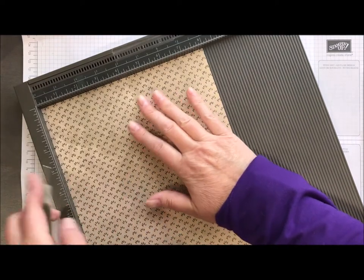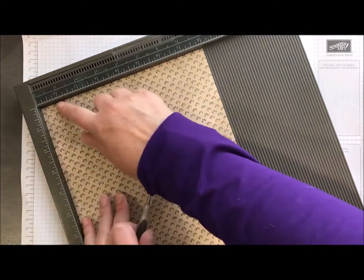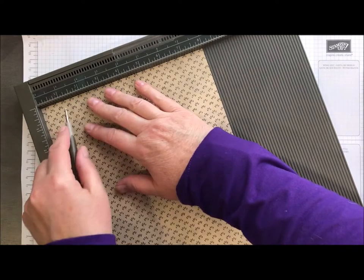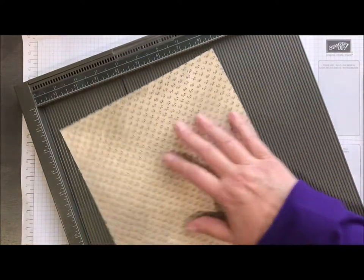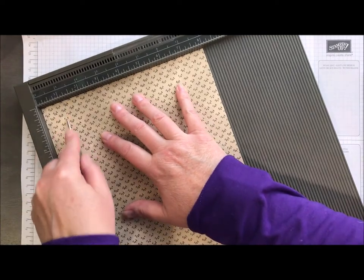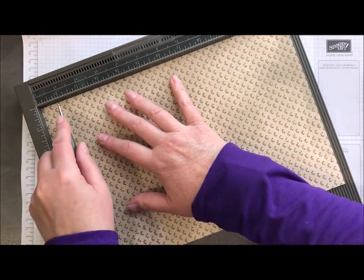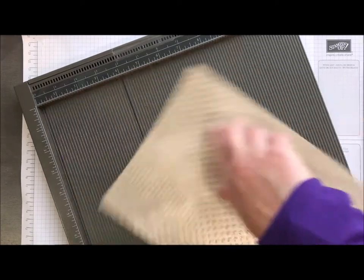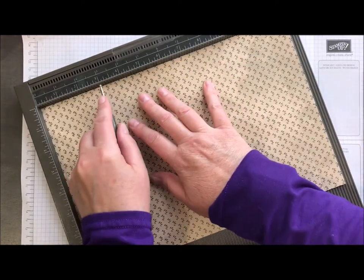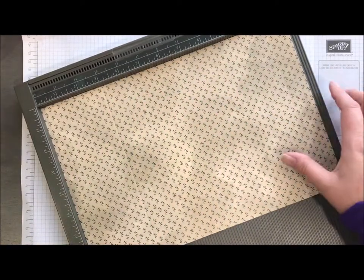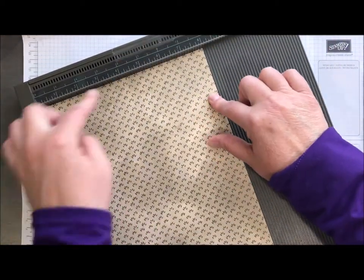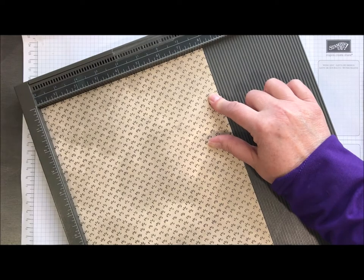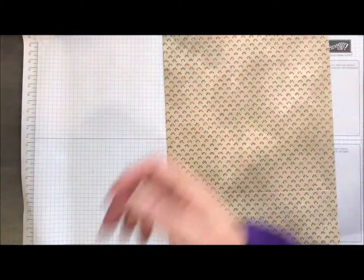So we're going to take this piece and we're going to score, you're going to have your eight inch at the top and I'm going to score at one inch, turn it around and do one inch. I'm going to do one inch across this way and three inches on the bottom. Okay. So when you look at it this way, you're going to have a one inch, a one inch, a one inch. This one down here is a three inch. So I'm done with the scoring tool. So let me get that out of the way.